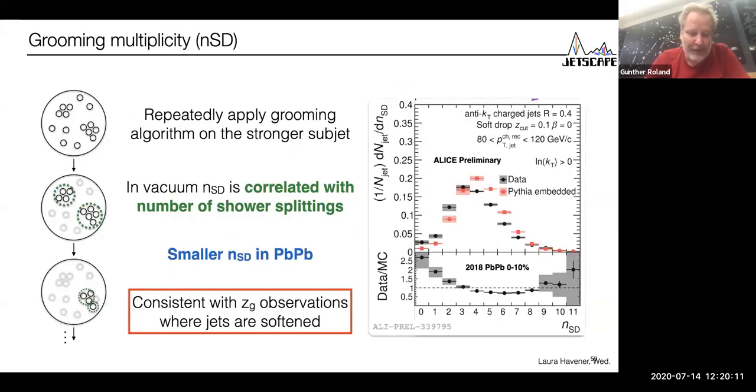There's another measurement from Alice. This is a measurement of how many soft drop steps, where you go to the hardest jet and throw away the soft stuff, how often can you do that sequentially following the branch of the hardest subjet until it is gone? You see that this number of soft drop steps gets enhanced. The jets for which you can do that only very few times gets enhanced in lead lead compared to PP. That is a sign that it is the soft part of the jet that is most affected by quenching and not the core.